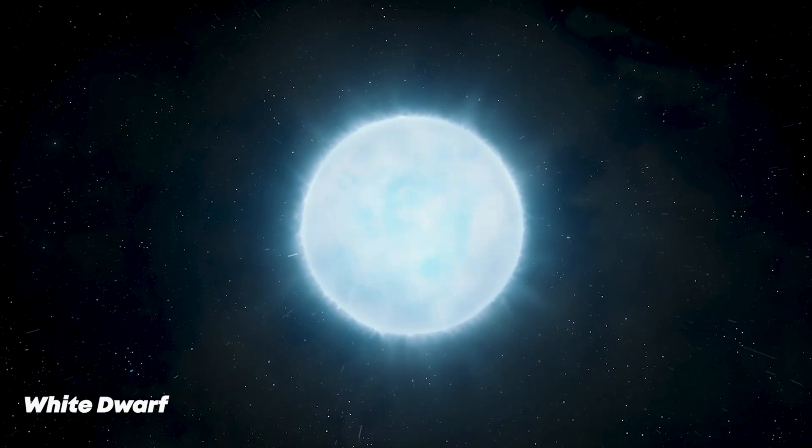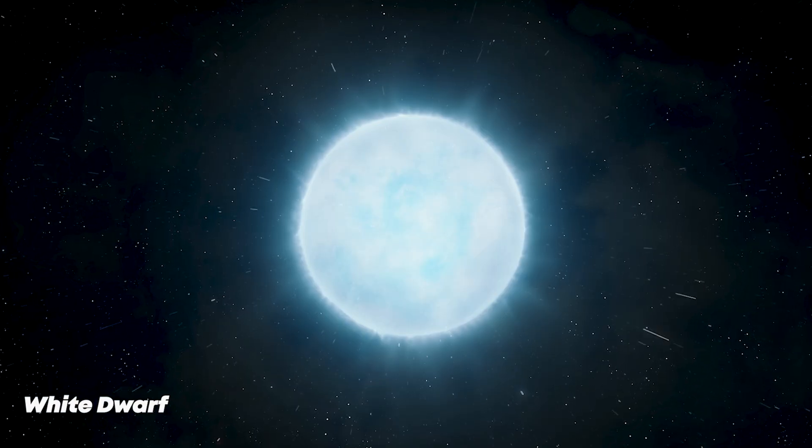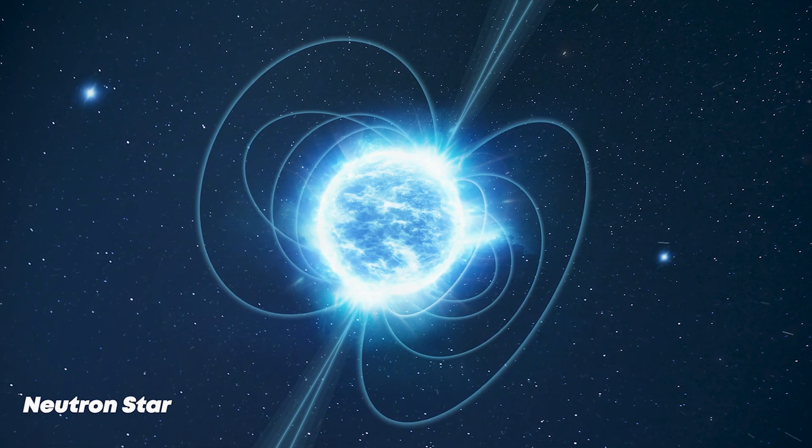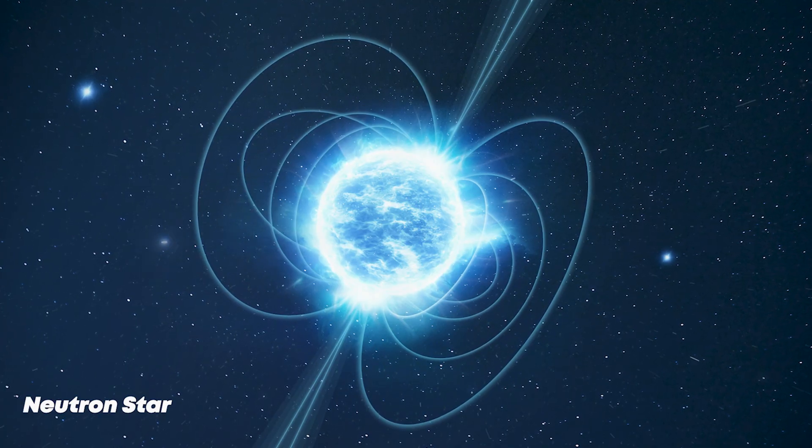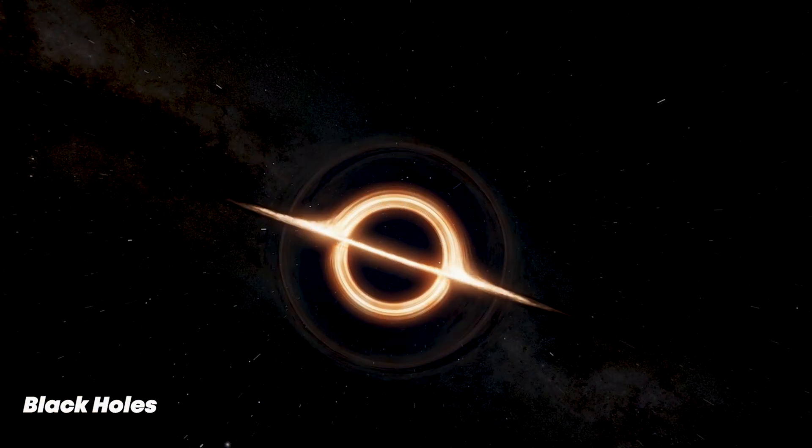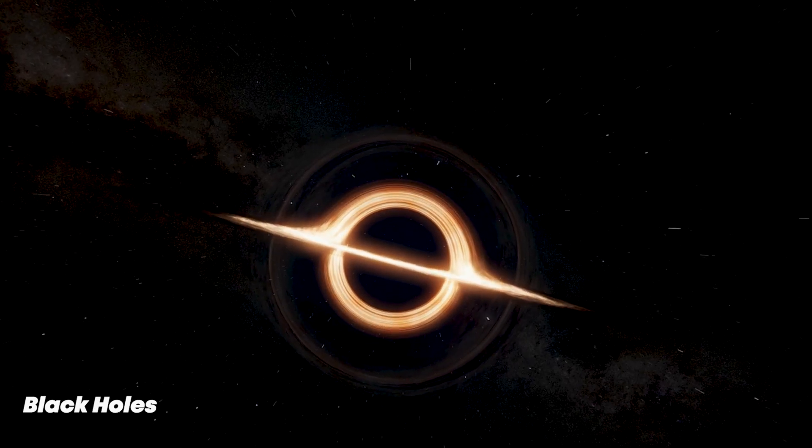A dense, earth-sized core, glowing faintly with leftover heat. For larger stars, gravity crushes matter into neutron stars, objects so dense that atoms collapse into nuclear matter. And if the star is massive enough, gravity wins completely, forming a black hole.